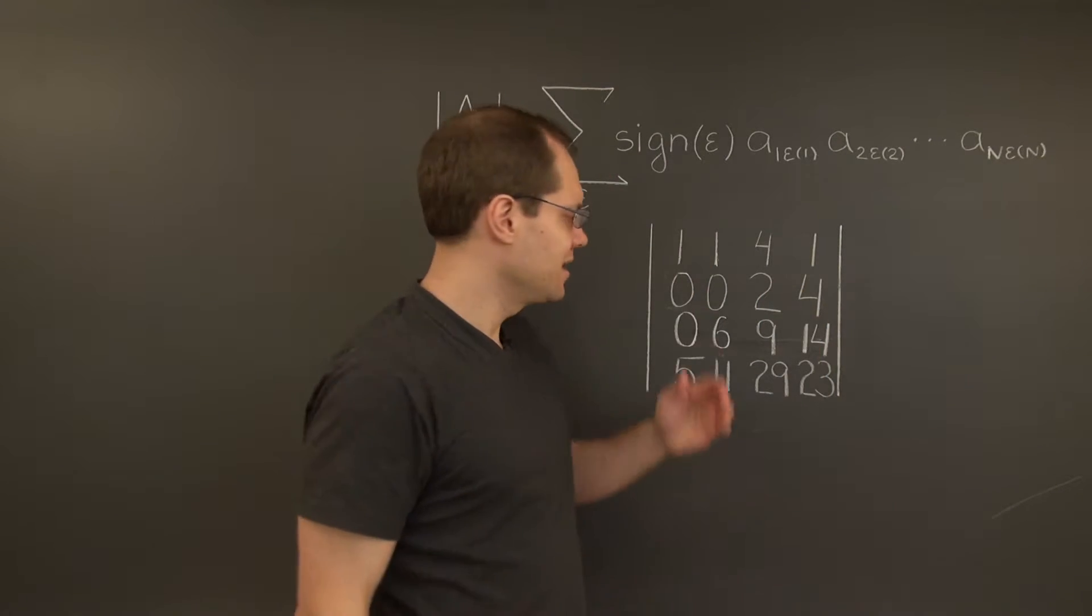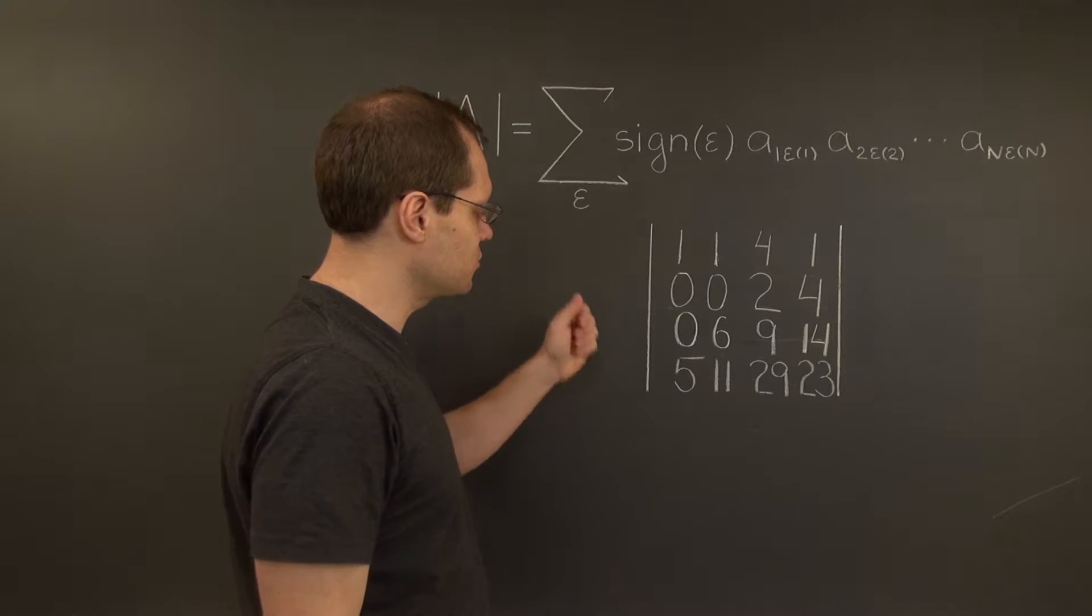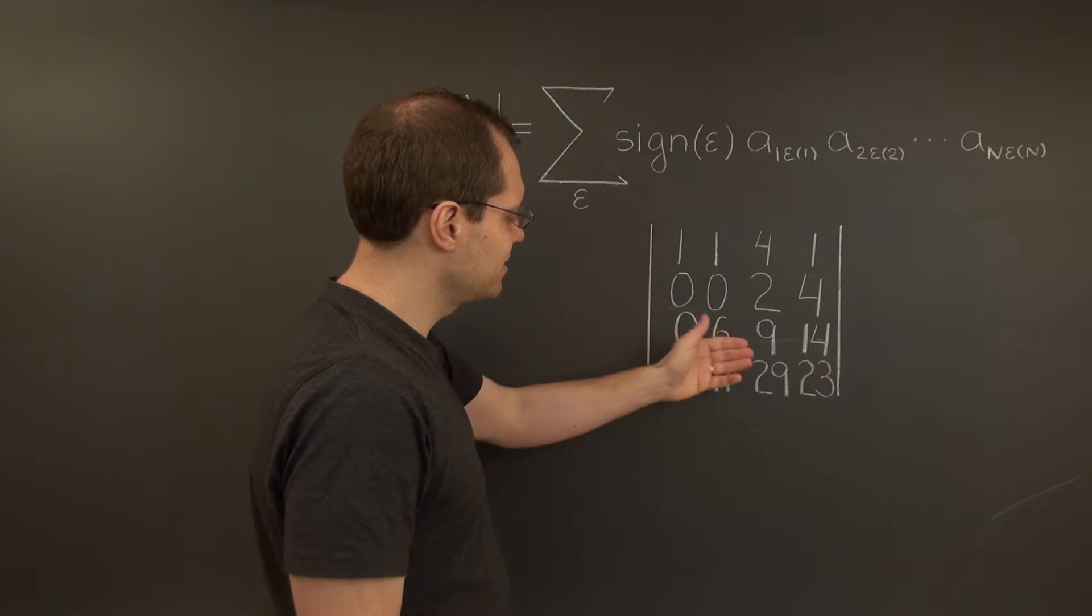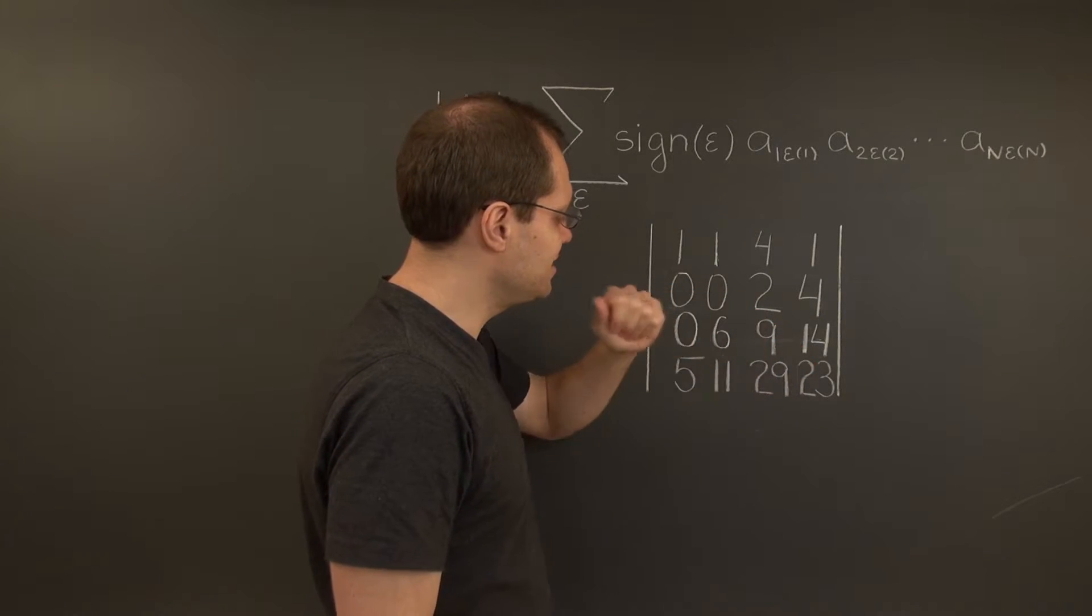Okay, next we subtract 5 of the first row from the fourth, and end up with 0, 6, 9, 18.